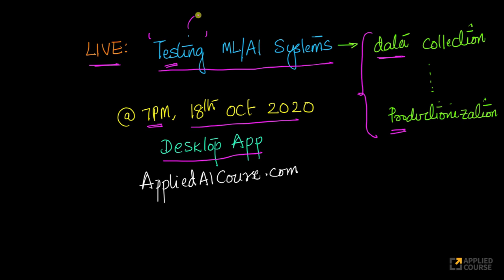This is a very interesting and important aspect to be a successful machine learning engineer or data scientist. This is especially useful for our students who come from software testing or software QA backgrounds, because now they can take their knowledge of machine learning and AI and merge it with their domain expertise in software testing and QA — to be eligible for roles where they would be building and thoroughly testing machine learning and AI systems before a model actually goes into production.